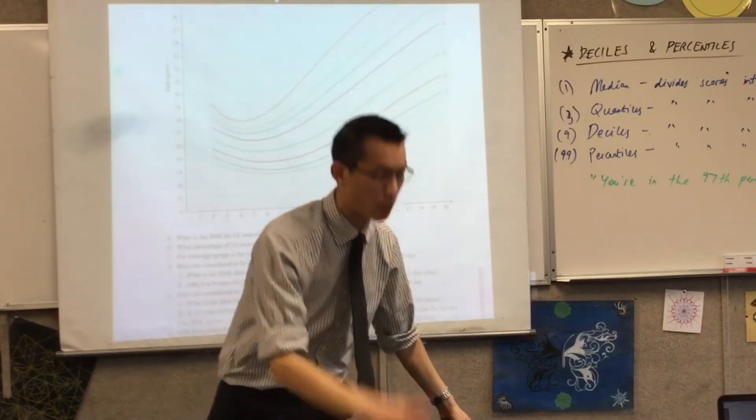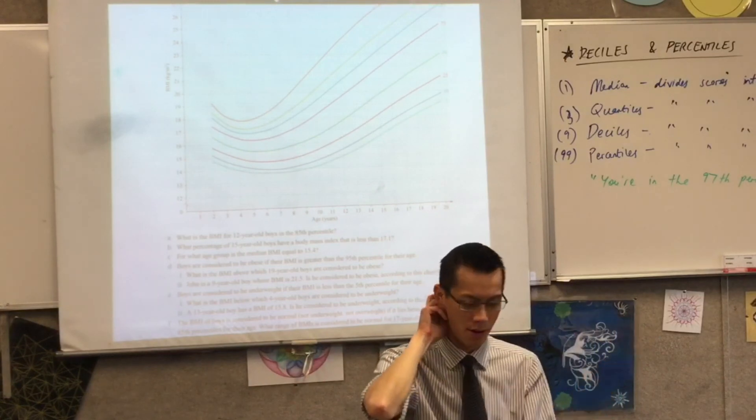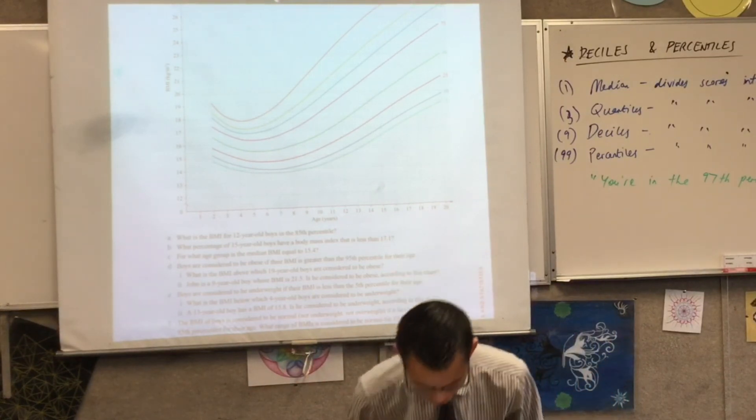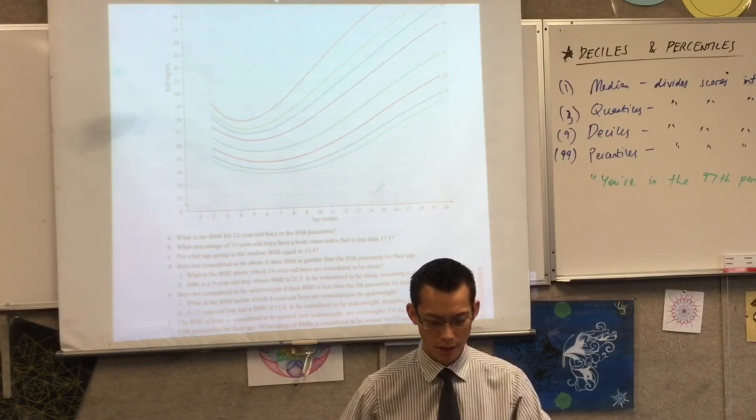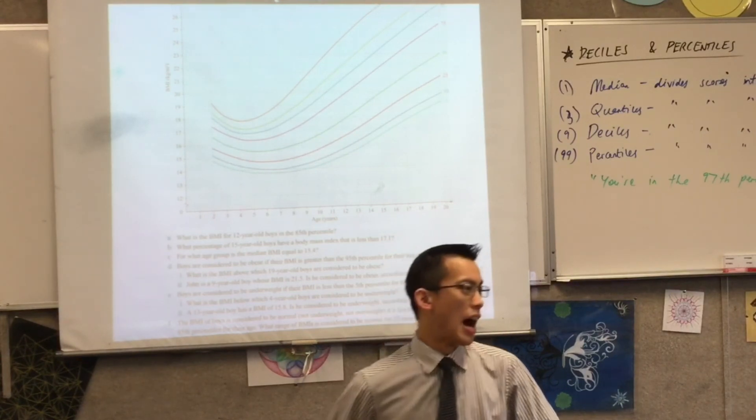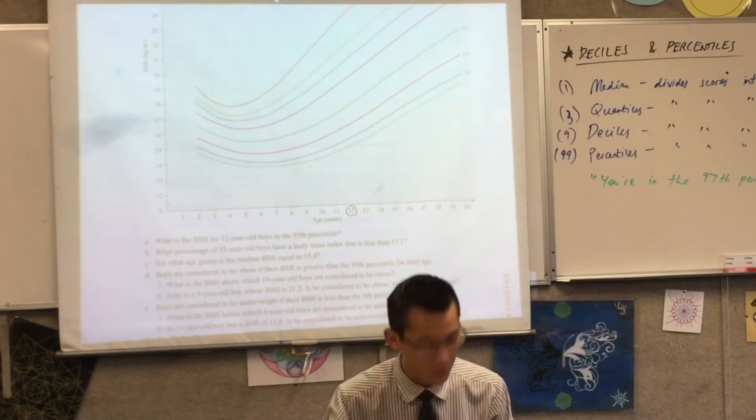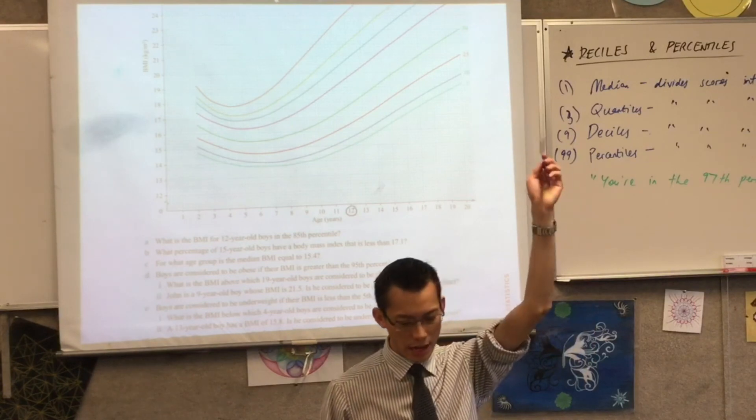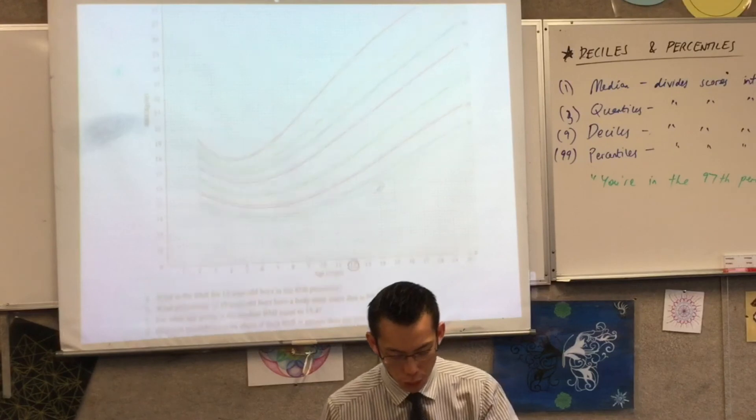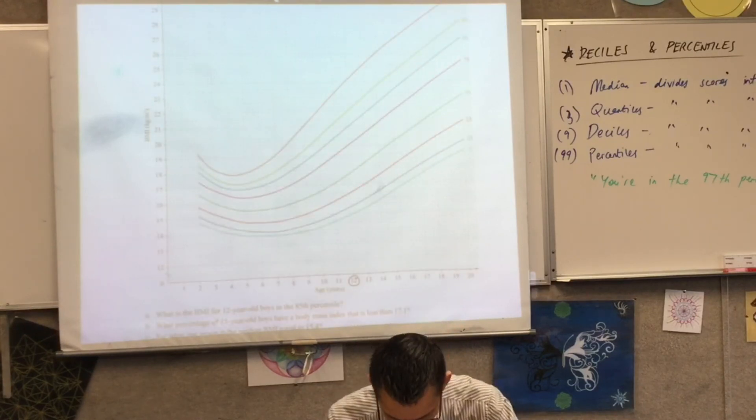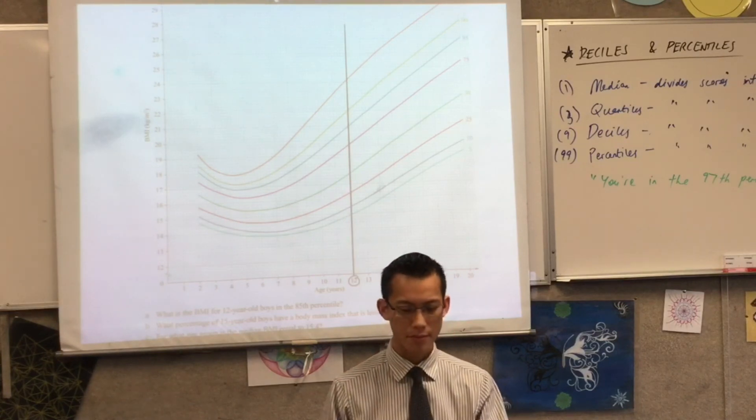The first question says, and you'll need your ruler for this, and the reason I photocopied this out is so you can draw all over this, because you can't do it, obviously, with your textbook. It says, what is the BMI for 12-year-old boys in the 85th percentile? So have a look, age is across the horizontal axis, so I see 12 is there. Now with your ruler then, draw up a line that shows all of the BMIs and percentiles for 12-year-olds.